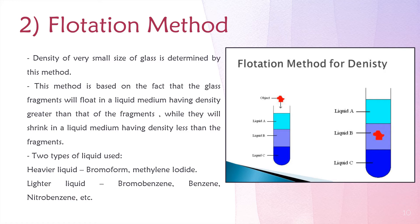In the diagram you can see that in a test tube, three liquids — A, B, and C — are taken and the glass fragment is inserted. The density of the glass fragment equals the density of liquid B, so we can determine the density of the glass piece in the test tube.